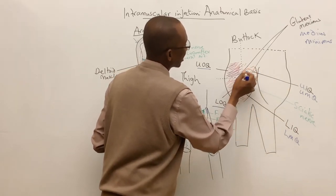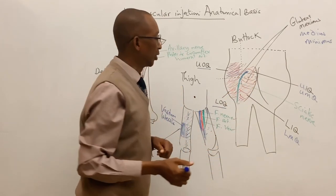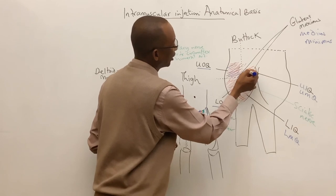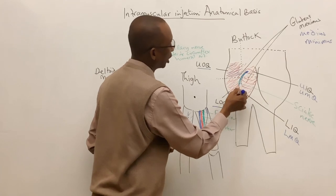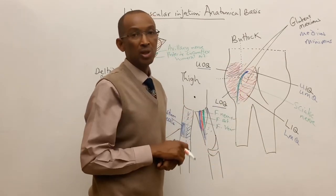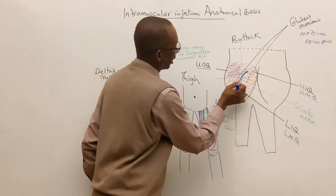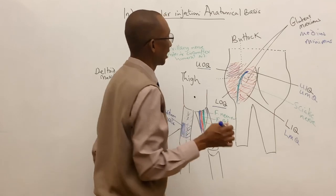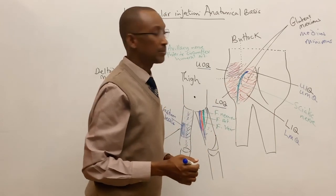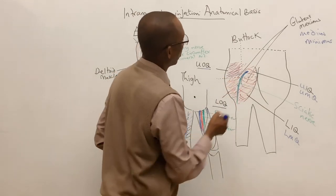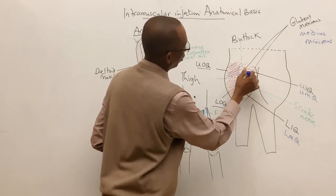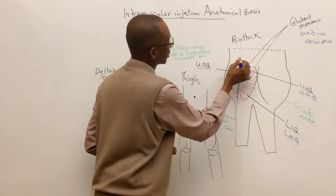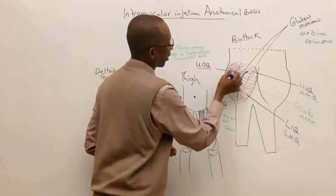The upper medial quadrant contains the emergence of the sciatic nerve, one of the largest nerves supplying the thigh and leg. As the sciatic nerve exits the upper medial quadrant, it travels downward and laterally into the lower outer quadrant before descending into the leg. Therefore, the lower outer quadrant is also not a good injection site, as you could inject directly into the sciatic nerve. The lower medial quadrant similarly contains neurovascular structures.